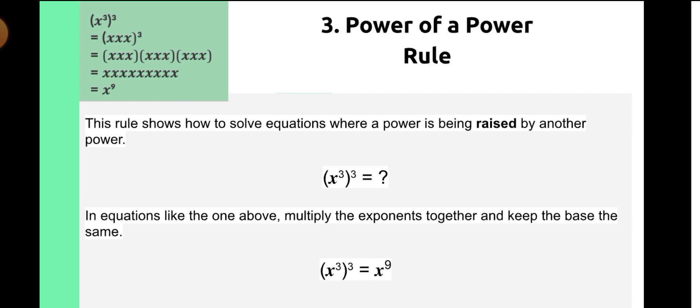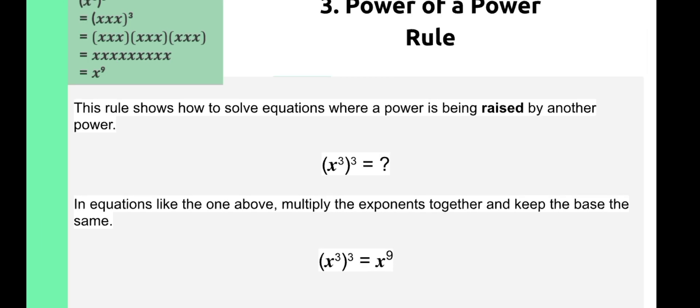Our third rule is the power of a power rule. This rule shows how to solve equations where a power is being raised by another power. For example, x raised to the power of 3, raised to the power of 3: in equations like this, we multiply the exponents together and keep the base the same. So we multiply exponents 3 times 3, and we end up with x raised to the power of 9.